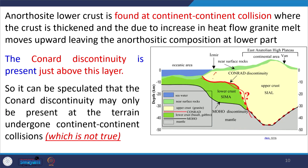In a continental-continental collisional system like the Himalayas, the anorthosite system earlier occupied the lower crust. Due to high heat flow, the granitic melt moves upward and the anorthosite, being denser than granite, remains at the bottom. This creates a crustal system with granitic melt in the upper part and anorthosite at the lower part. The Conrad discontinuity is present just above these two layers. Anorthosite mostly forms labradorite — the mineral used as a gemstone.